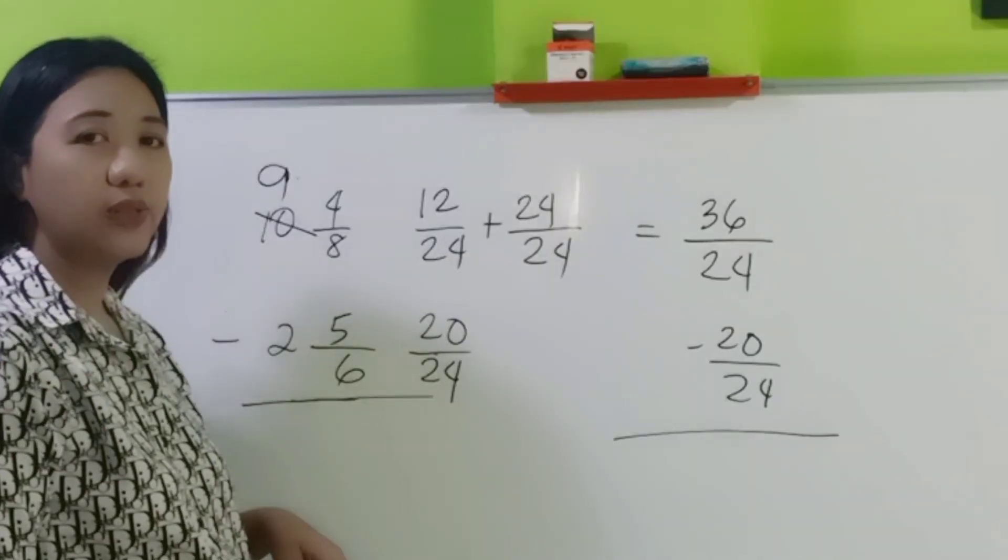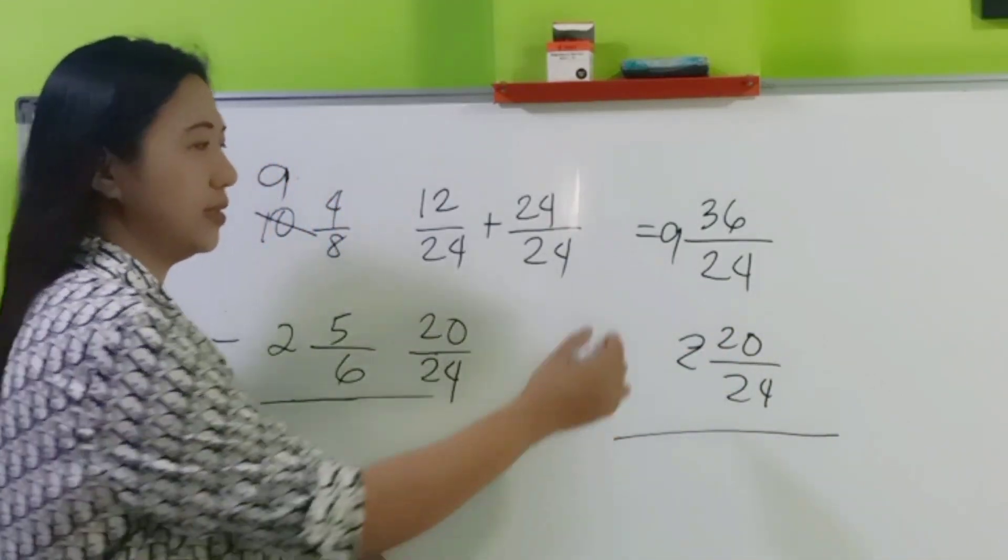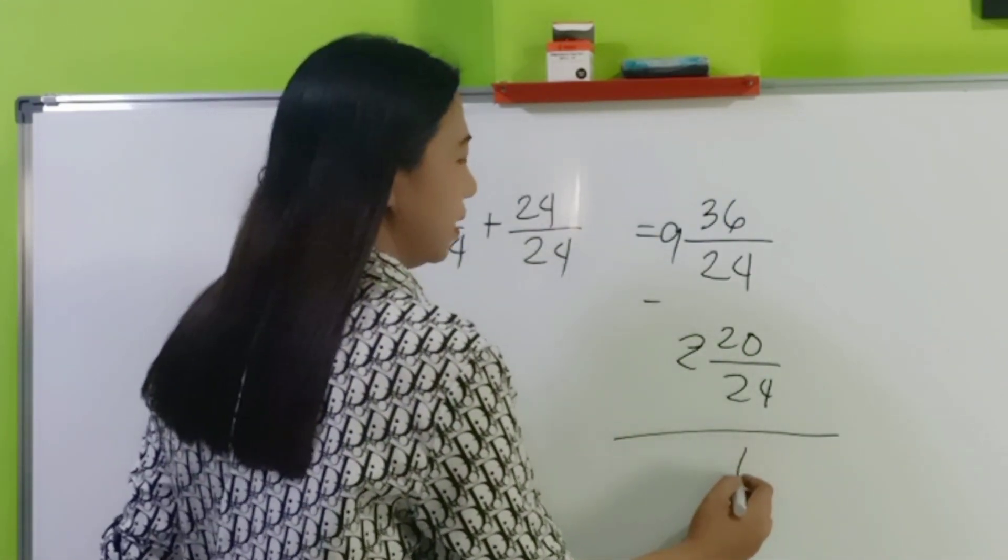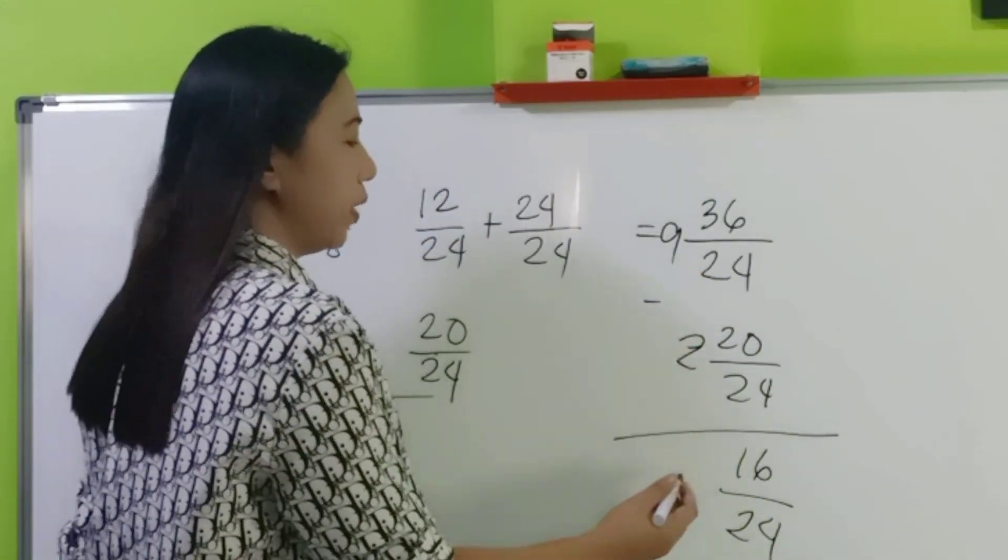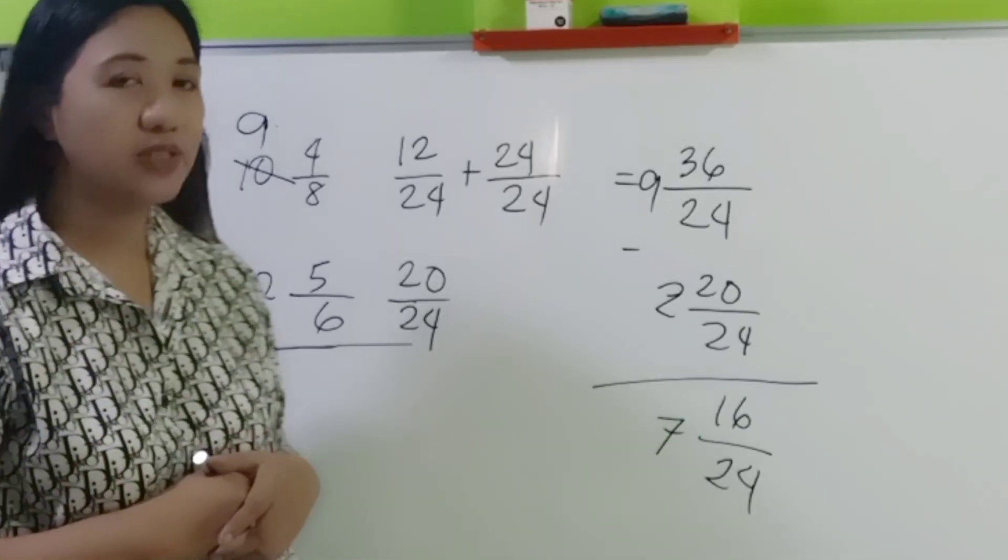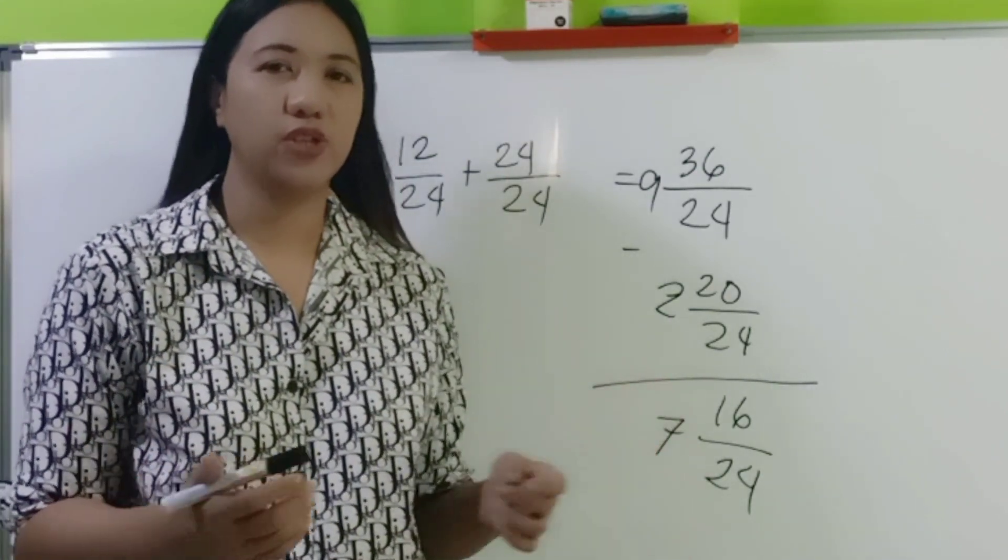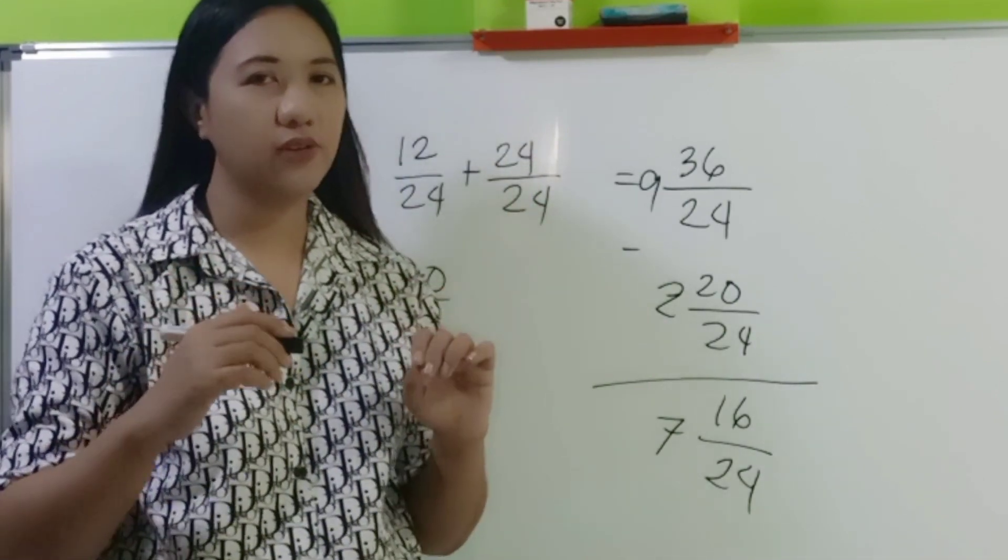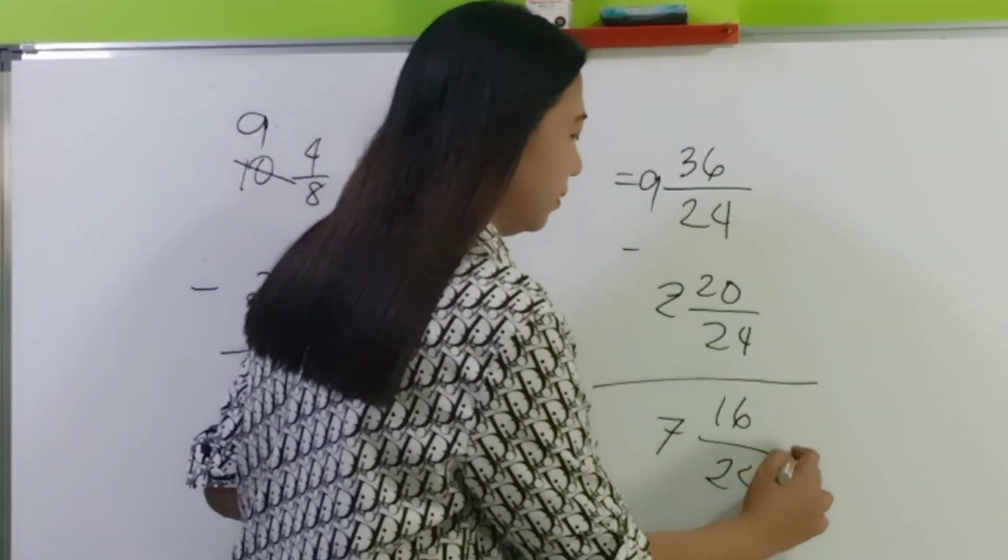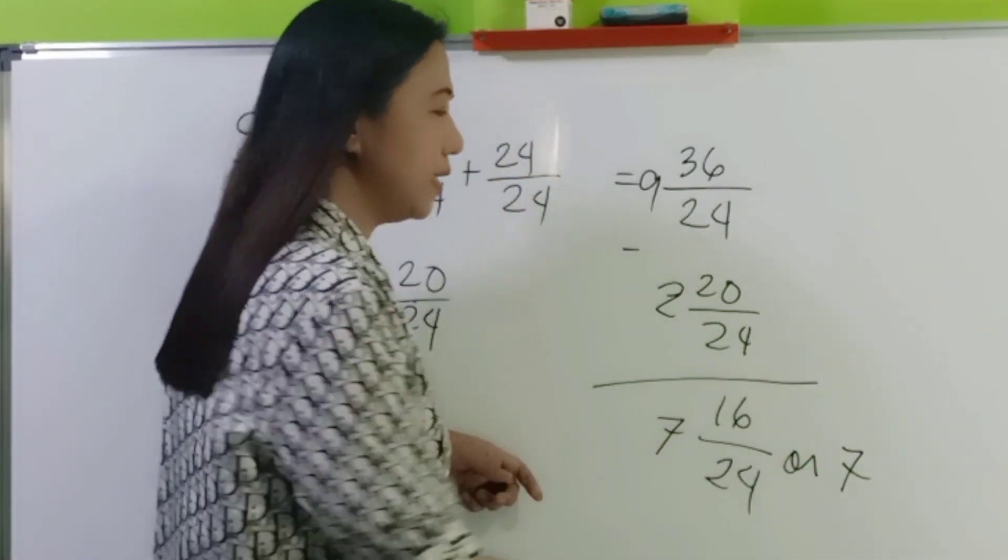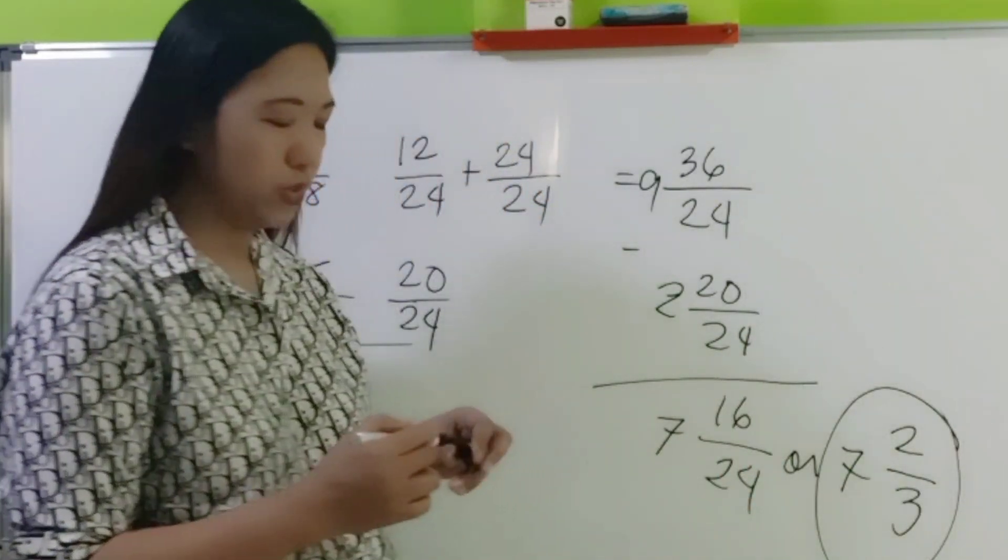Then, don't forget the whole numbers. 9 and 2. We are now ready to subtract. 36 minus 20 is 16. Copy the common denominator, which is 24. And then, 9 minus 2 is 7. Now, can you simplify 7 and 16 twenty-fourths? Yes. If you're not still familiar with simplifying fractions, you may visit the link above. It will teach you how to simplify fractions. 16 divided by 8 is 2. 24 divided by 8 is 3. So, we have now 7 and 2 thirds.